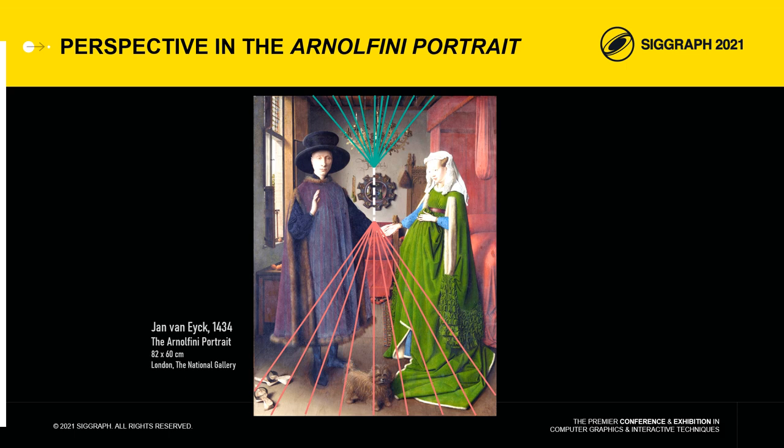After all, there was no reason for Van Eyck to use only one principal point. However, the other parts of the painting are more problematic. Several vanishing point arrangements have been suggested, but none of them have been universally accepted nor proven to be reproducible from one painting to another. Finally, most art historians believe that Van Eyck used an empirical perspective.